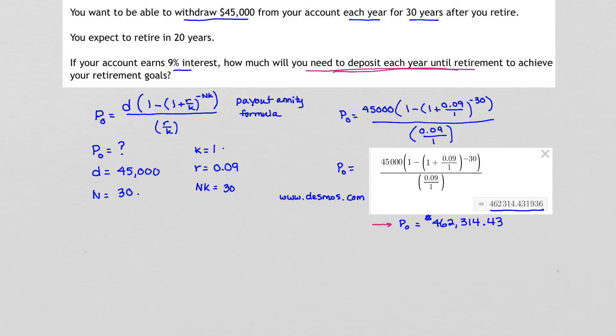Well, to achieve those retirement goals, we need to have this much money in our account. So this P sub 0 actually becomes the money that I need in my account in order to retire. So this will become, in my annuity formula, P sub N, meaning it will be the future amount that I need to save up for.